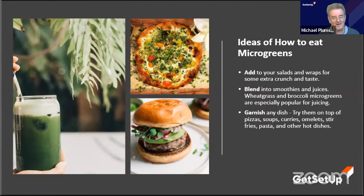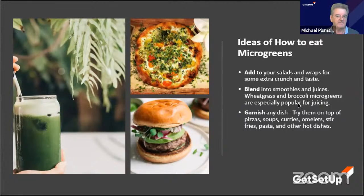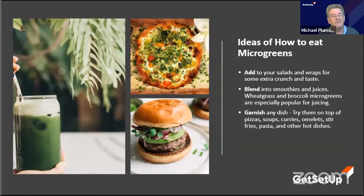I'd like you to come back to class and tell me how you're eating your microgreens once you've grown some. The conventional way is adding them to all sorts of salads and wraps, garnishing any dish. You can also blend them into smoothies — wheatgrass and broccoli microgreens are ideal for smoothies.